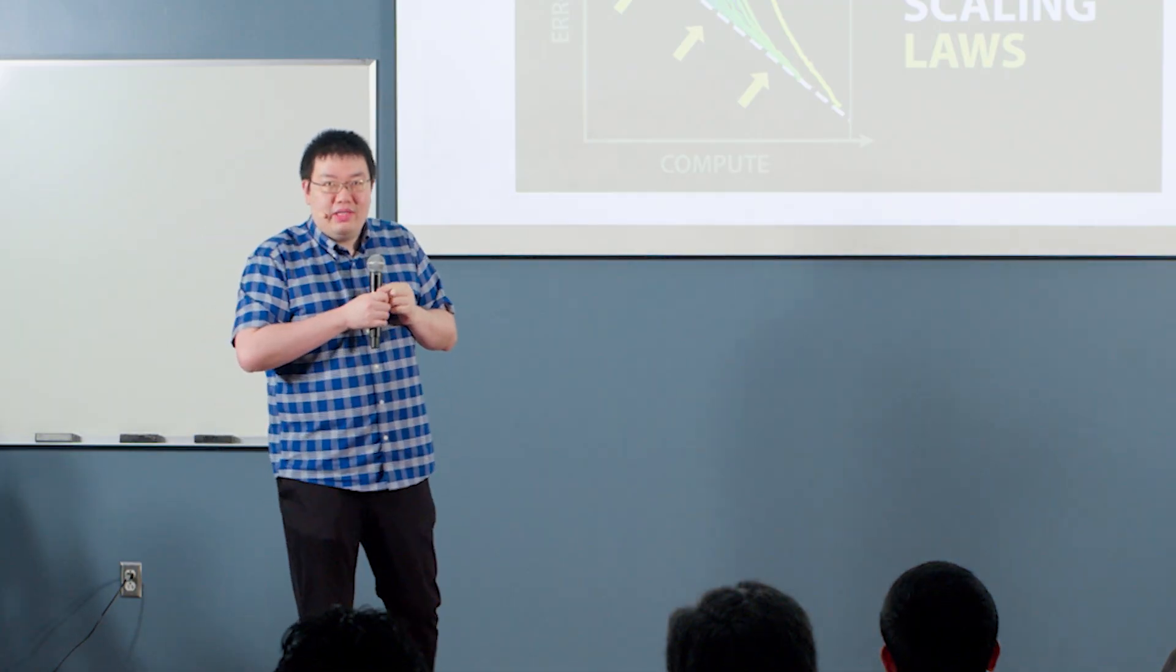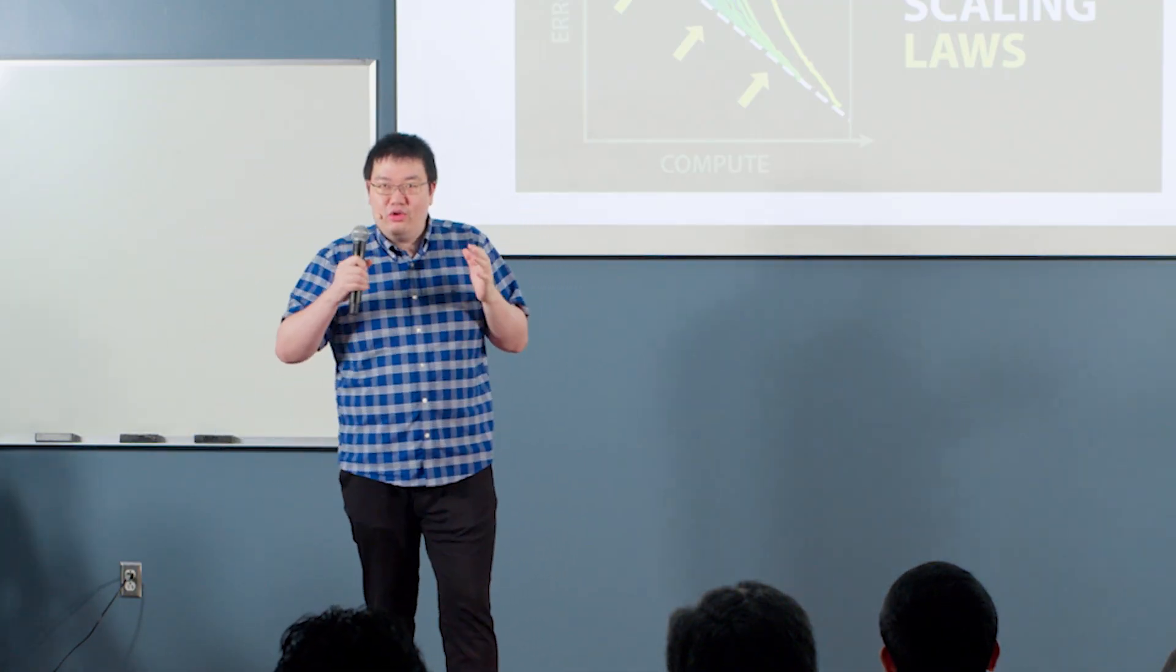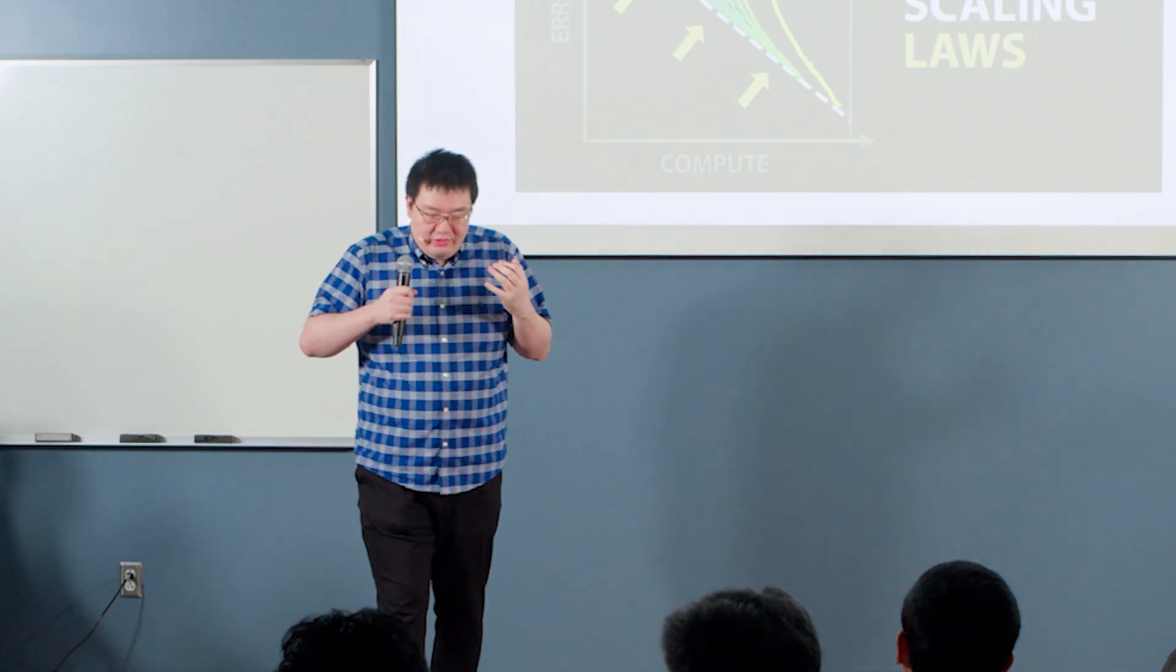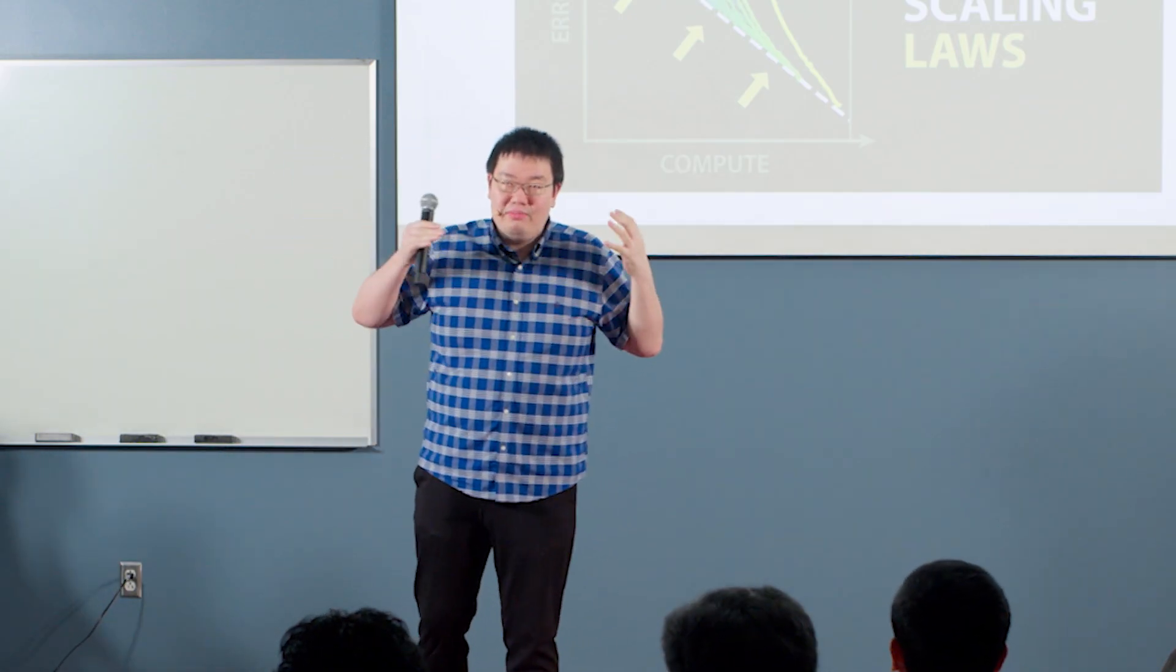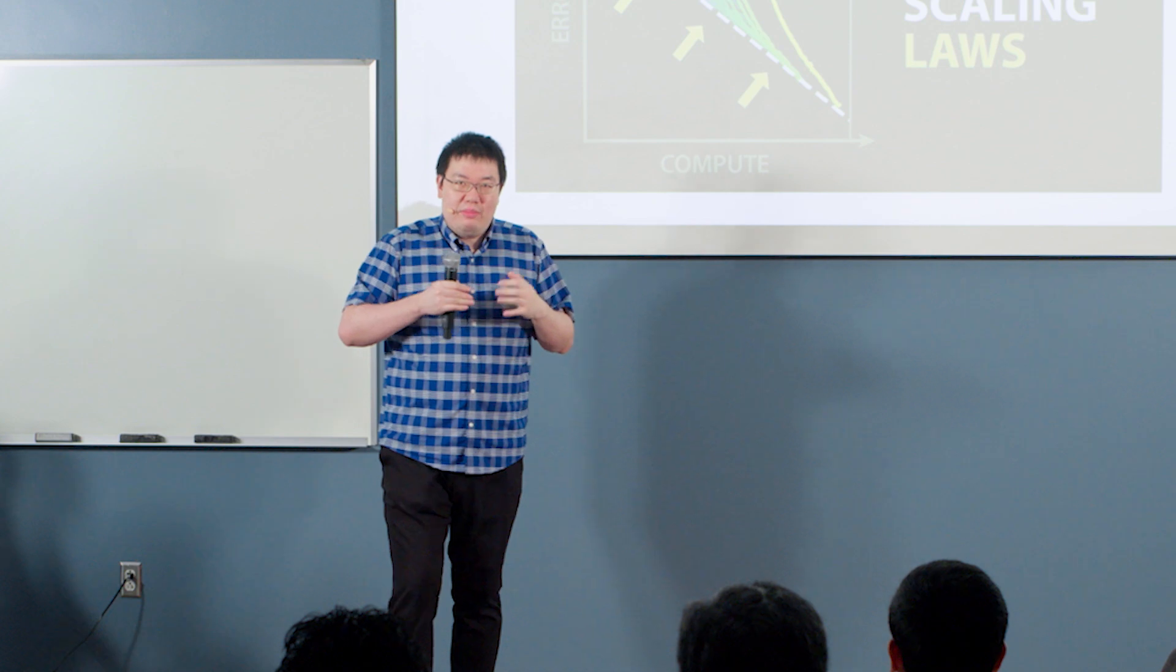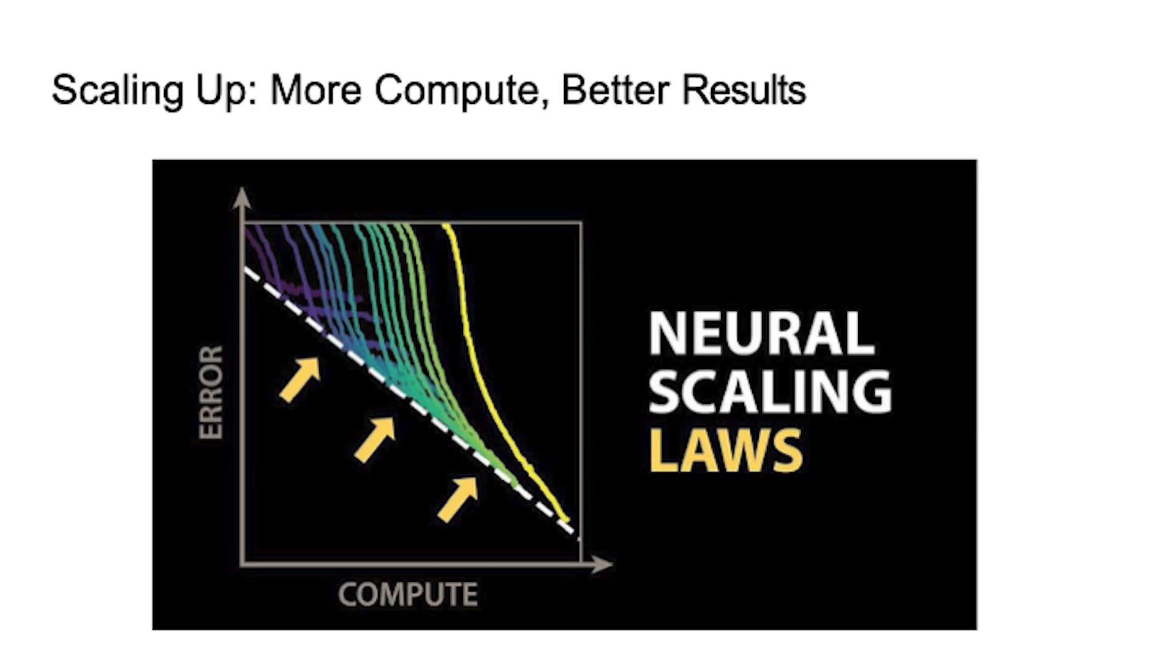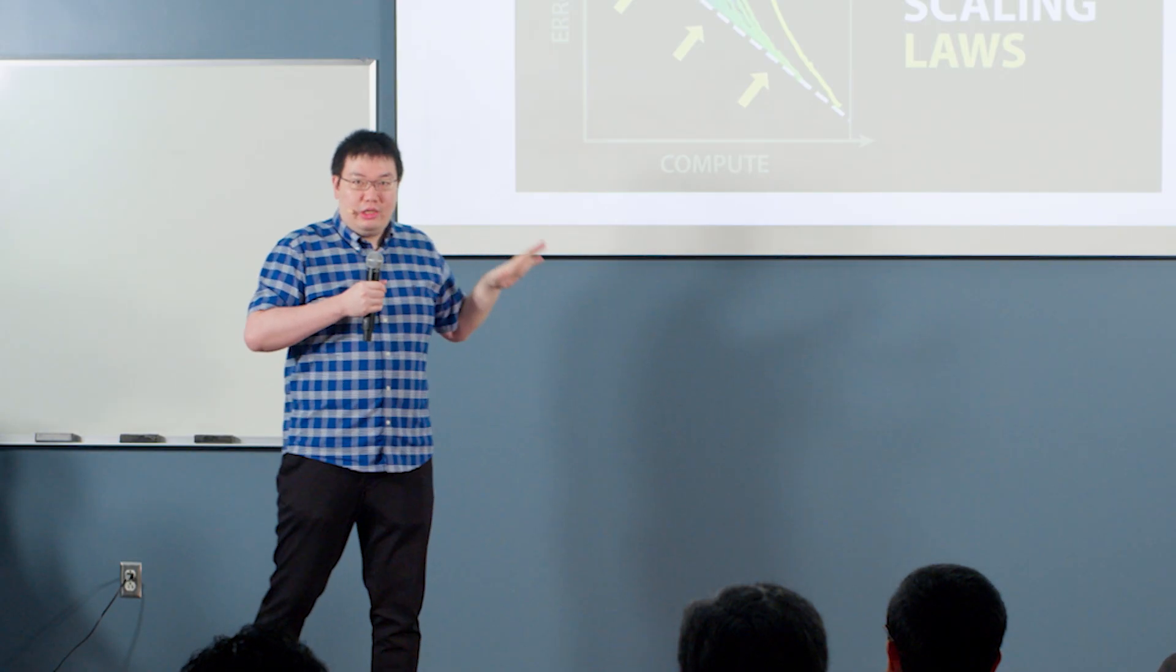And also, the last step is so-called scaling up. Because we found that if we scale up the model, we use more compute and more computing, more larger model and more computing resources, the performance is better. So this phenomenon is so-called scaling law, neural scaling laws in machine learning. So the horizontal axis is the compute, and the vertical axis is the error.